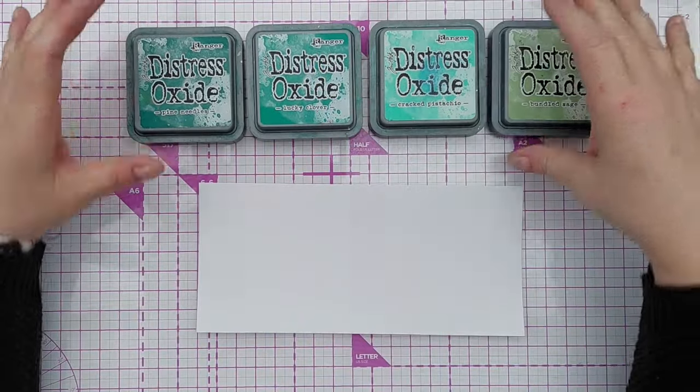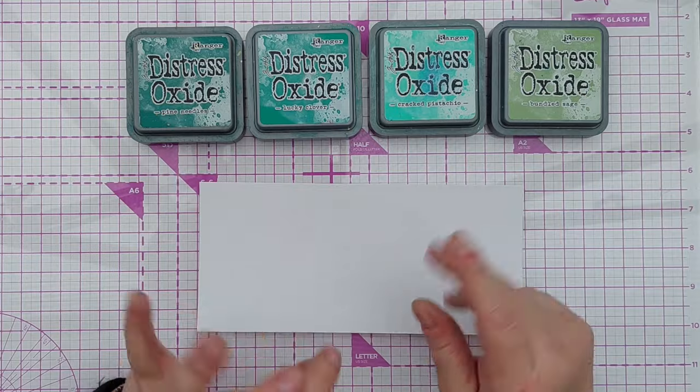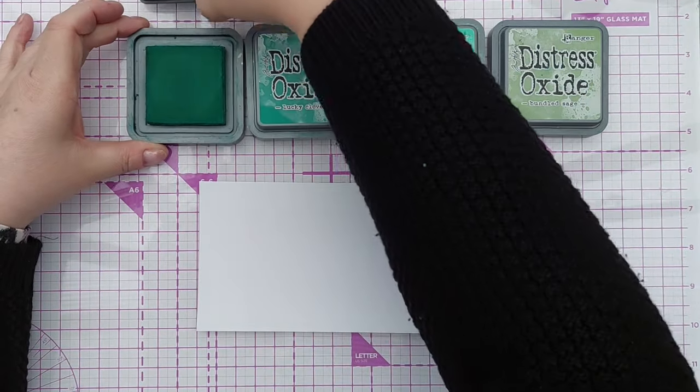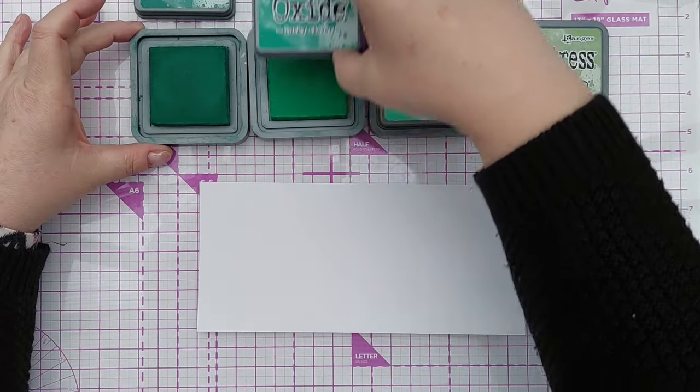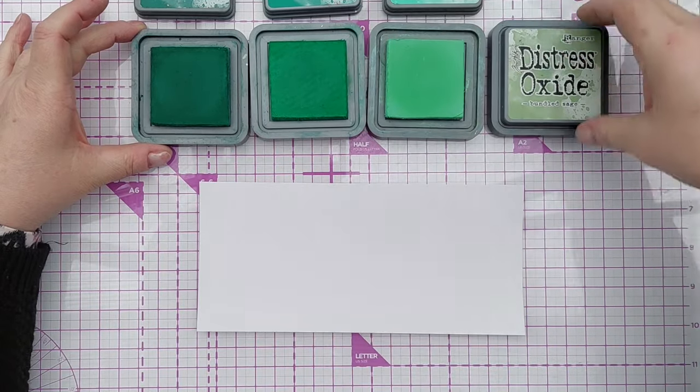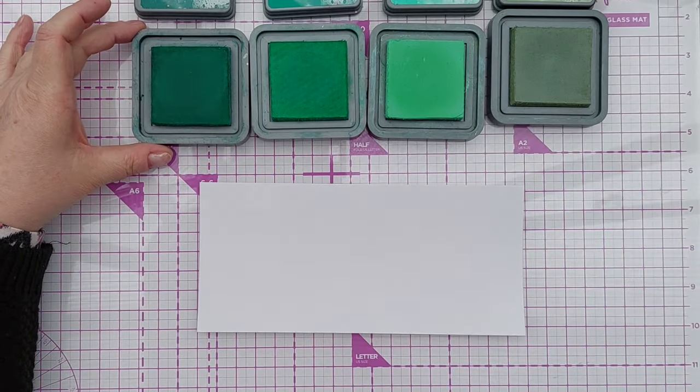The first thing I'm going to do is prepare a bit of mixed media to die cut my leaves from. So I've got all my green distress oxides here: pine needles, lucky clover, cracked pistachio, bundled sage.